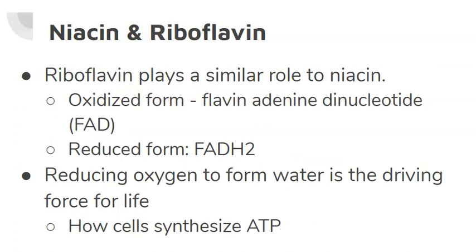During the reduction of pyruvate, two hydrogens are gained. Lactate can be oxidized back to pyruvate by losing two hydrogens. These hydrogens go to the NAD+. The plus on NAD+ shows that it has one less electron than in its reduced form. The extra hydrogen ion remains free in the cell, causing no net charge on the coenzyme. Riboflavin plays a similar role. In the oxidized form, the coenzyme form is known as flavin adenine dinucleotide, or FAD. When it is reduced, it gains two hydrogens and is known as FADH2. The reduction of oxygen to form water is the driving force for life because it is vital for the way cells synthesize ATP. Oxidation-reduction reactions are key to life.